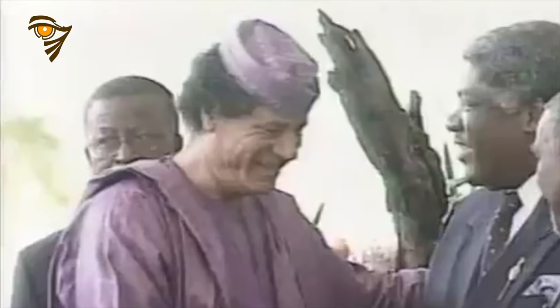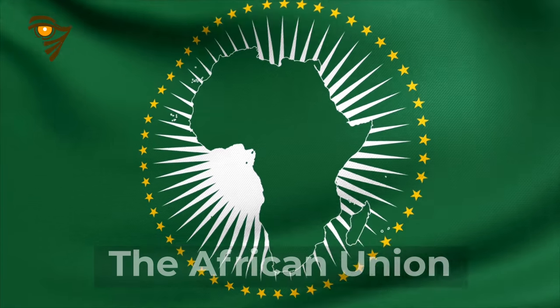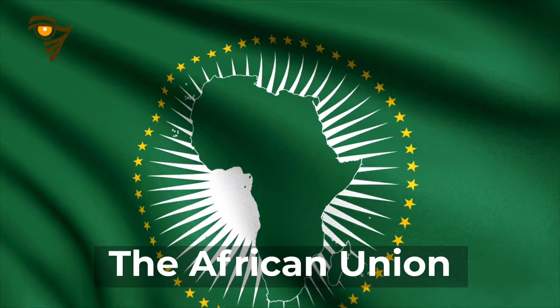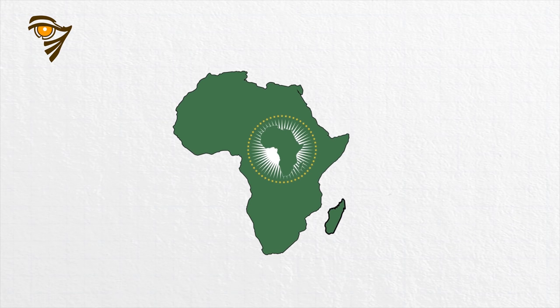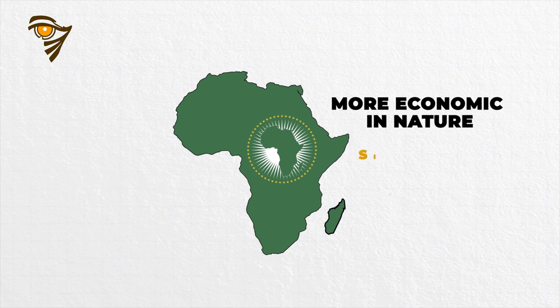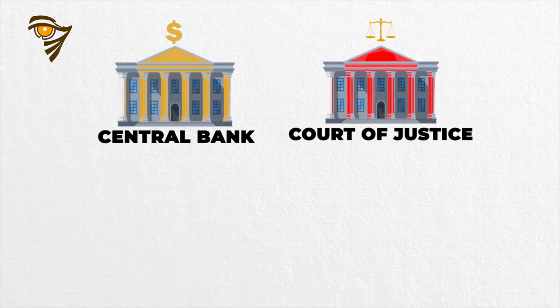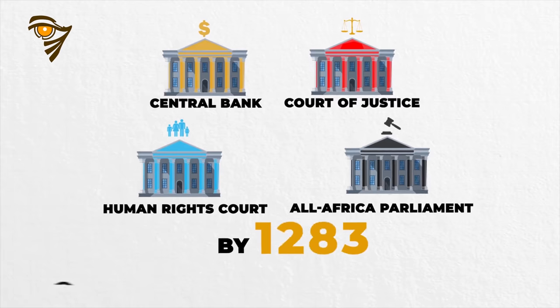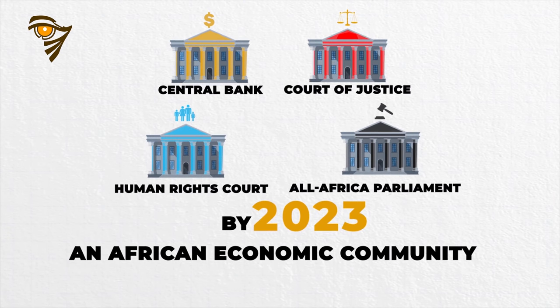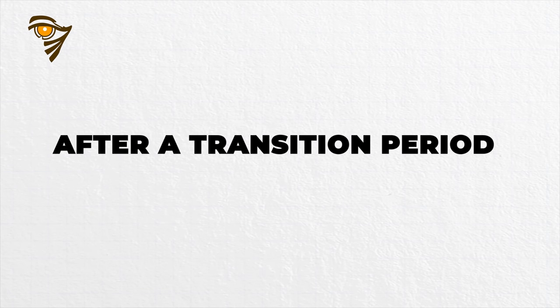In the year 2000, in a move spearheaded by Libyan leader Muammar Gaddafi, it was proposed that the Organization of African Unity be replaced by a new body, the African Union. Its structure is loosely modeled on that of the European Union. The African Union was to be more economic in nature, similar to its counterpart in Europe, and would contain a central bank, a court of justice, a human rights court, an all-Africa parliament, and by 2023, an African economic community with a common currency called the Afro.